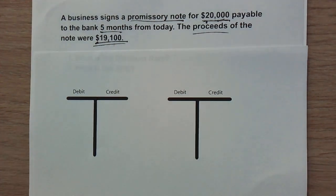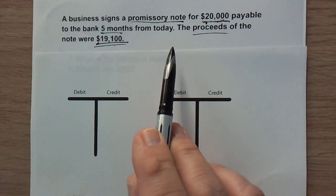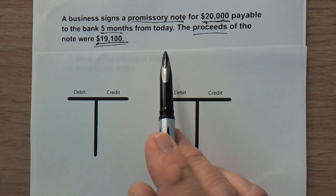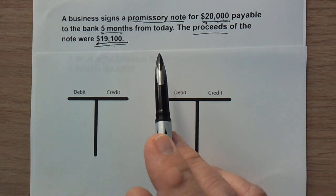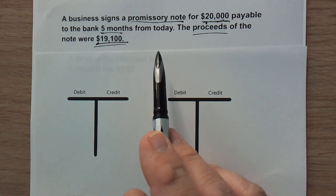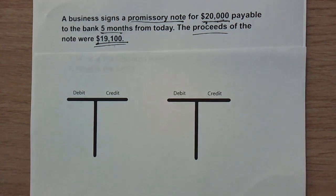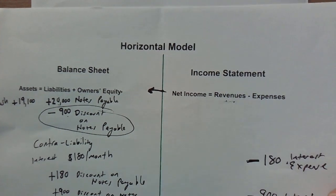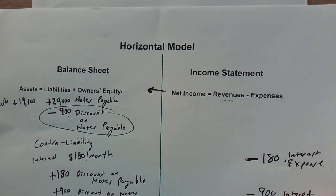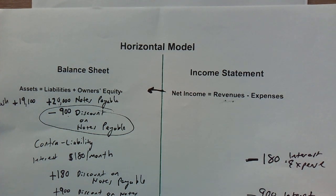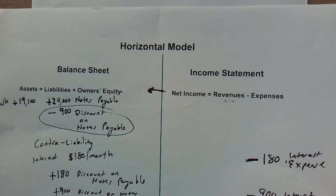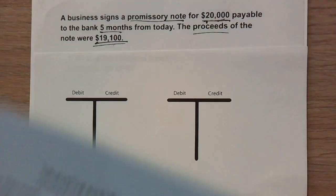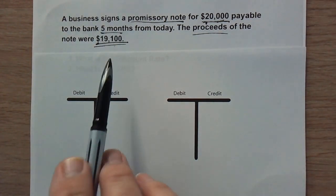Perhaps you've been asked to journalize a discount note transaction such as this one. This is our example from the prior two videos where we calculated the APR and discount rate, and worked up the horizontal model showing the transactions. You might also have to journalize these transactions and not know what to do. I'm Professor Capco and I'm going to make this simple and easy to understand.